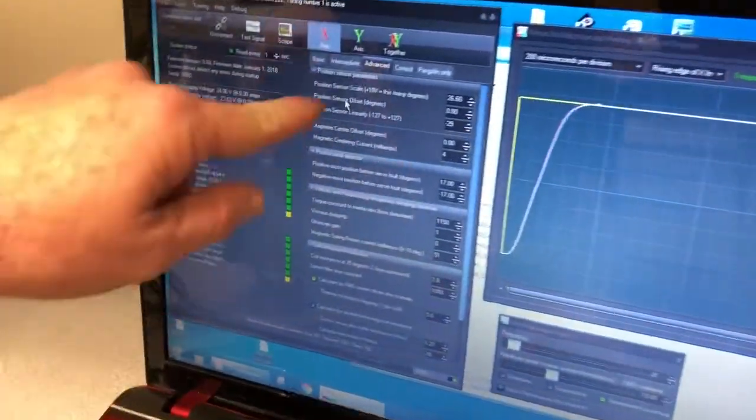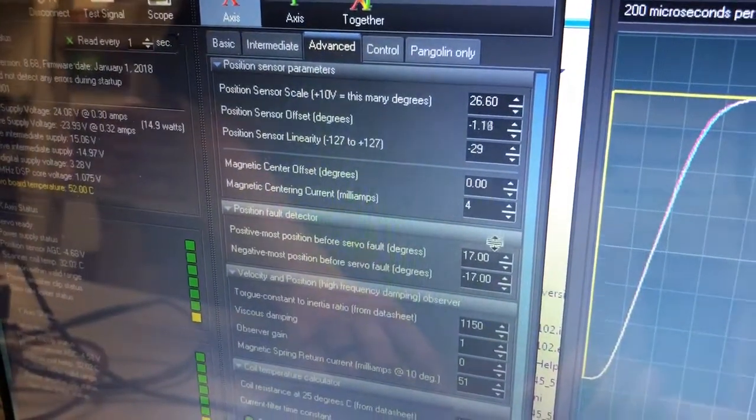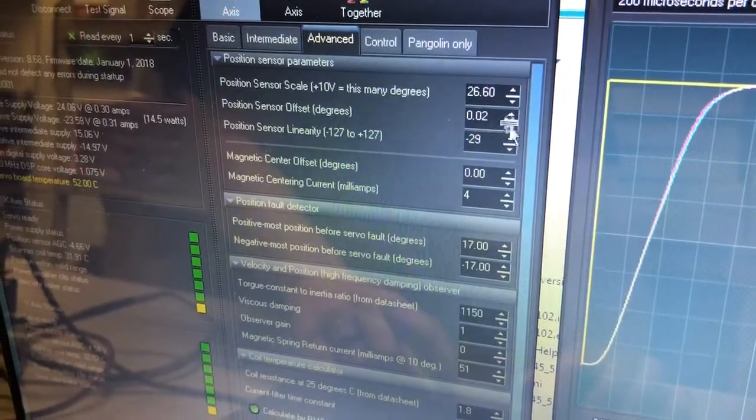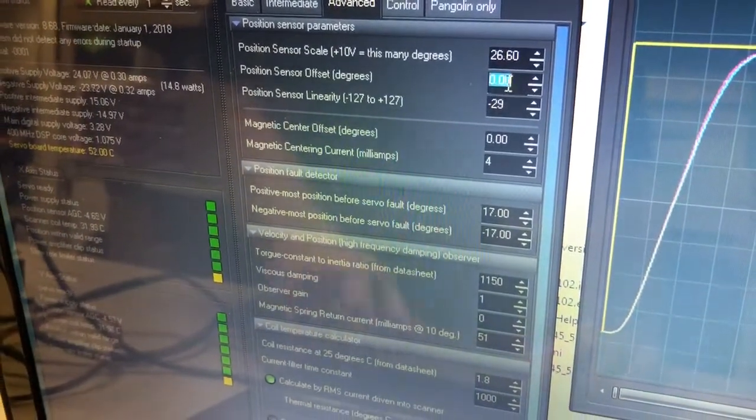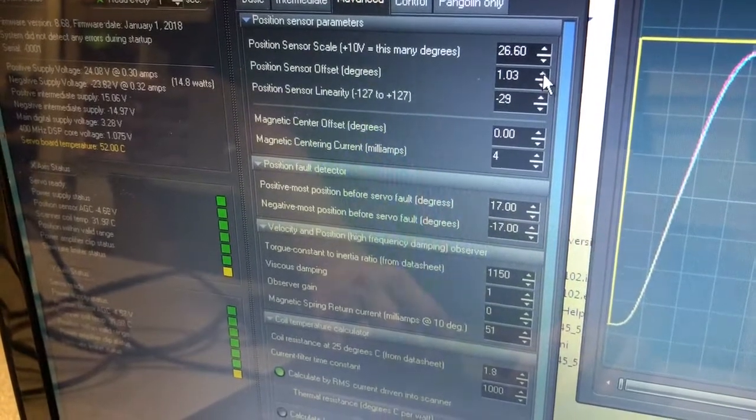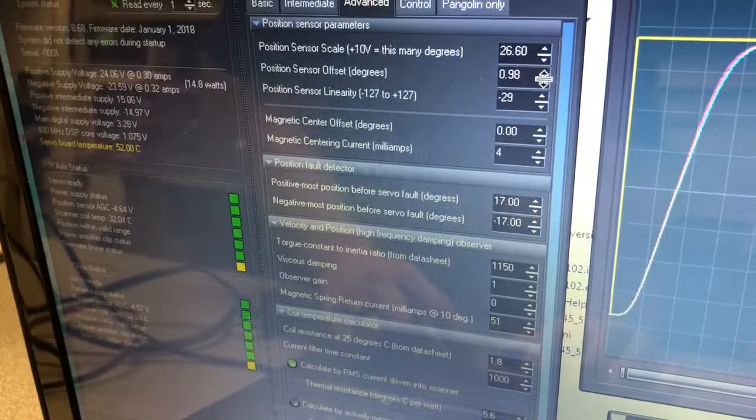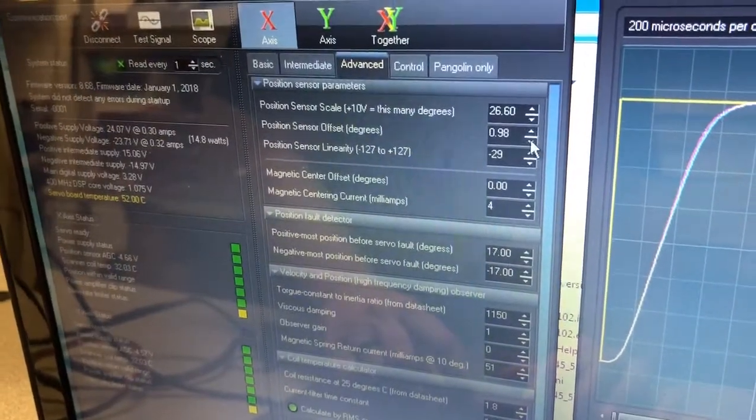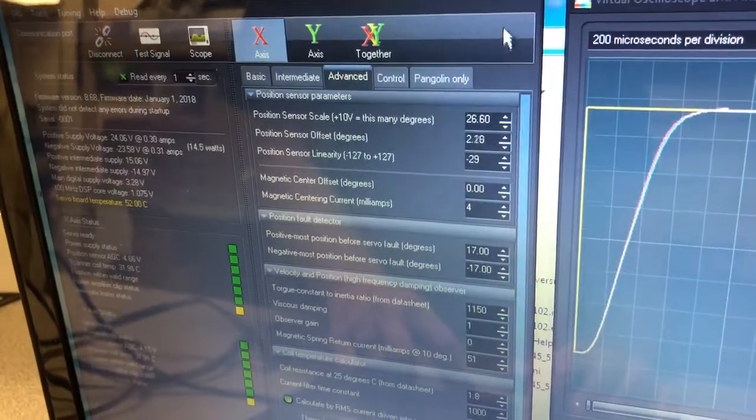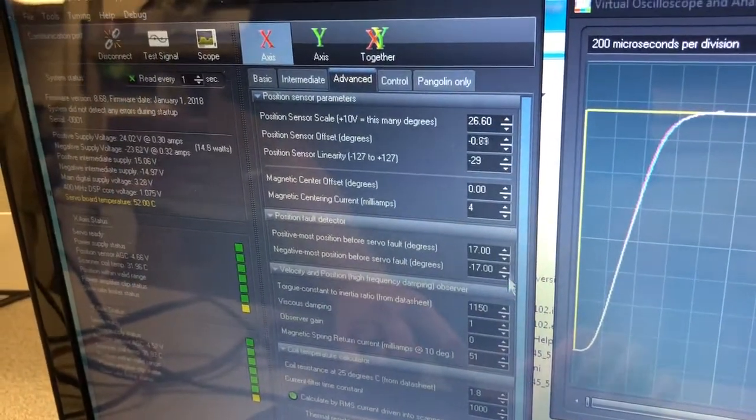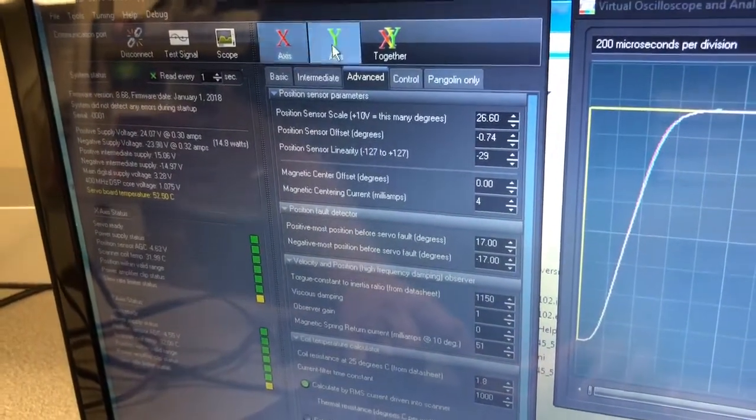There is something here called position sensor offset. And so you just move this positive or negative as needed. And the way this works is you could type in a number like zero or one degree. You can click the up and down arrow buttons like this, or you could just click here anywhere. It doesn't even matter where you click, and then just scroll up and down and this kind of drags it. So this way you can get some fine tuning on this.